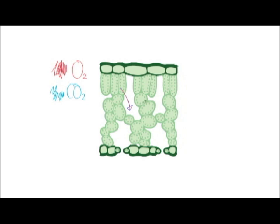This means that the concentration of oxygen is higher inside the leaf than outside, so oxygen diffuses out of the stomata and into the air. And vice versa for carbon dioxide.